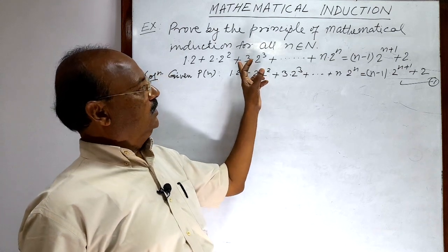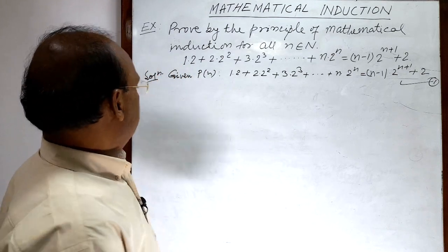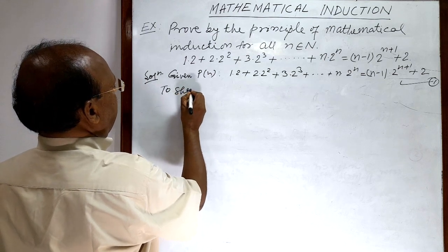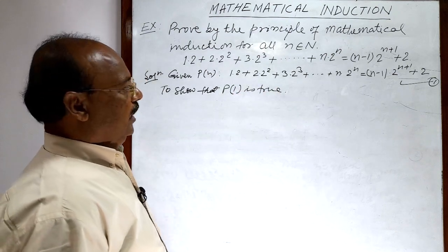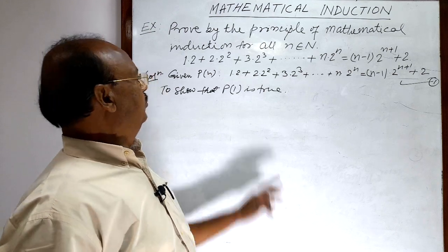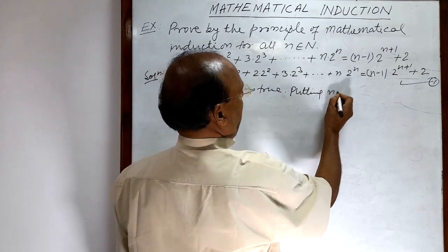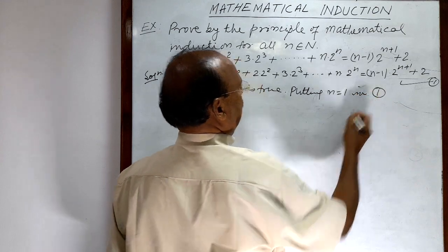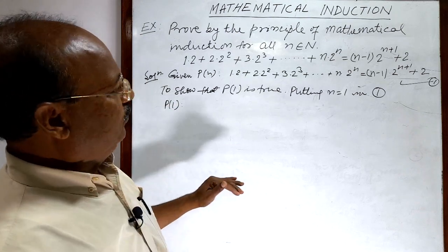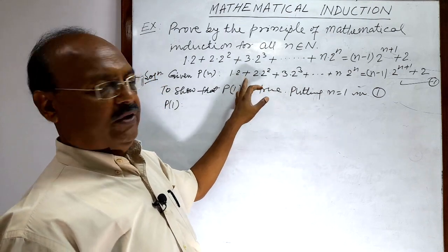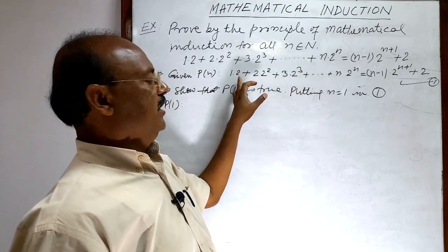First step is to show that P(1) is true. We get P(1) by putting n = 1 in relation number 1. We have to take care that when n = 1, we take only the first term on the left hand side, since the total number of terms is n, and when n = 1 we take only the first term.